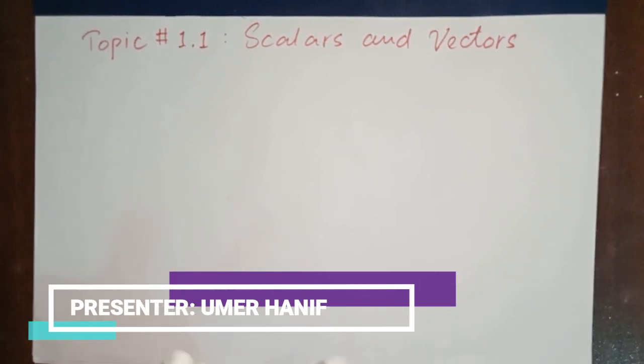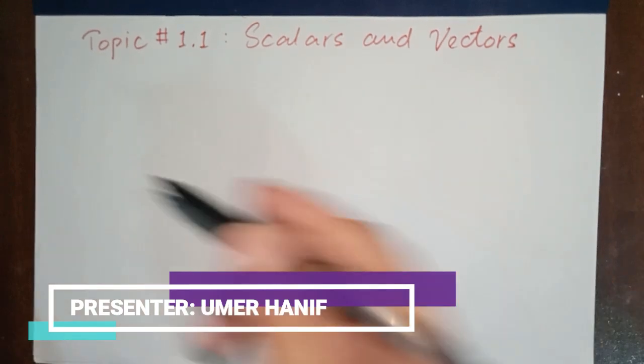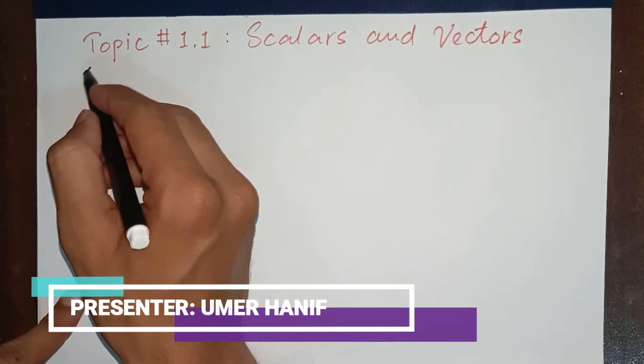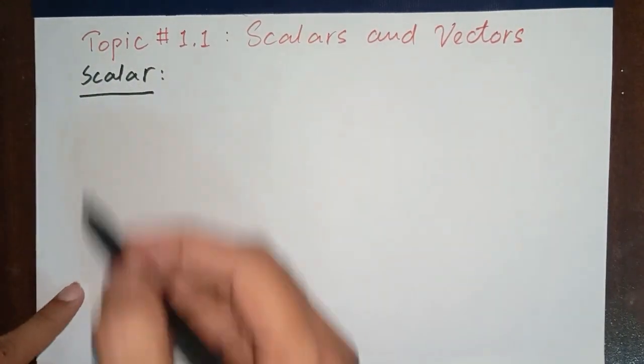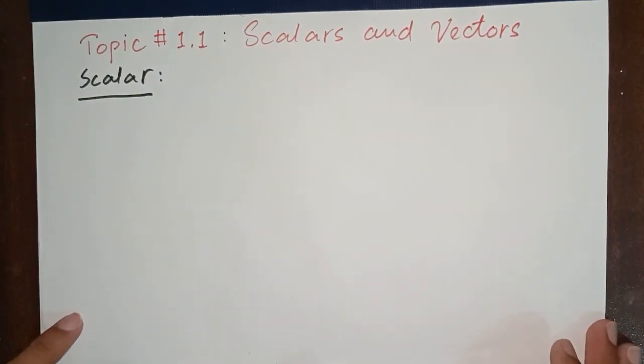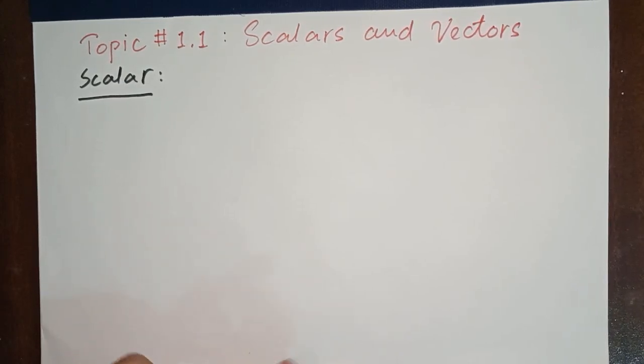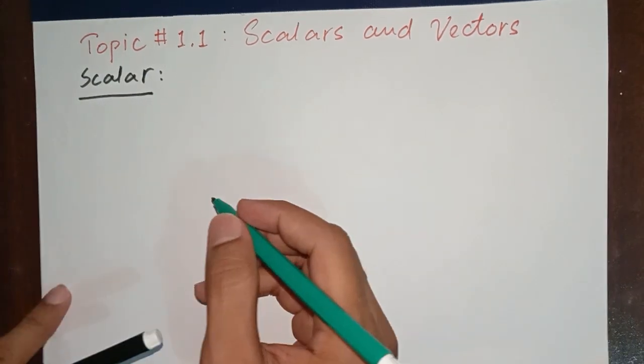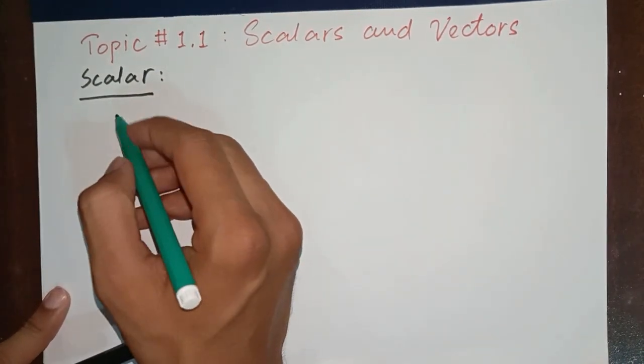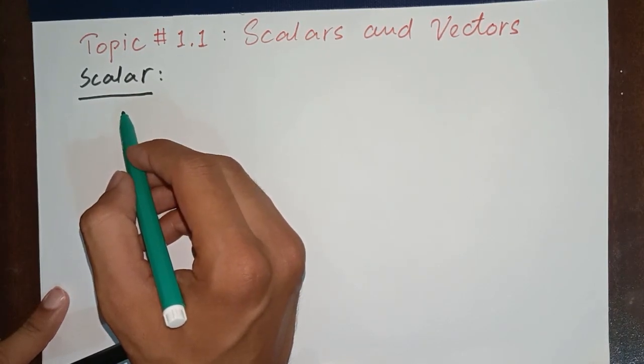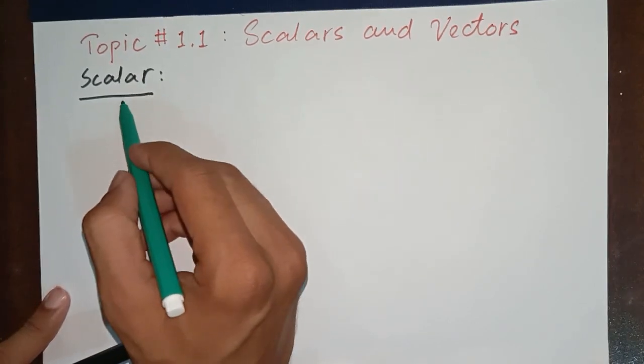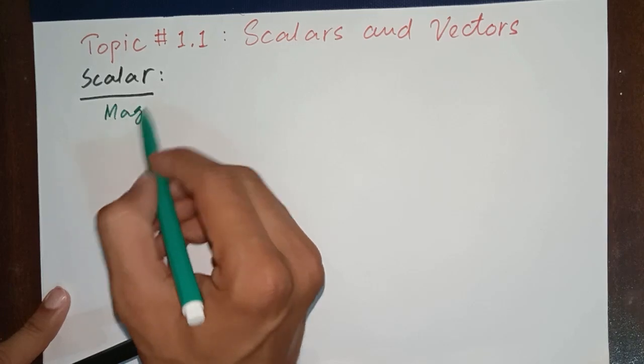Moving on to the first topic, that is scalar. A scalar is a quantity that has magnitude only, or you can say a scalar is a quantity that can be completely specified with its magnitude.